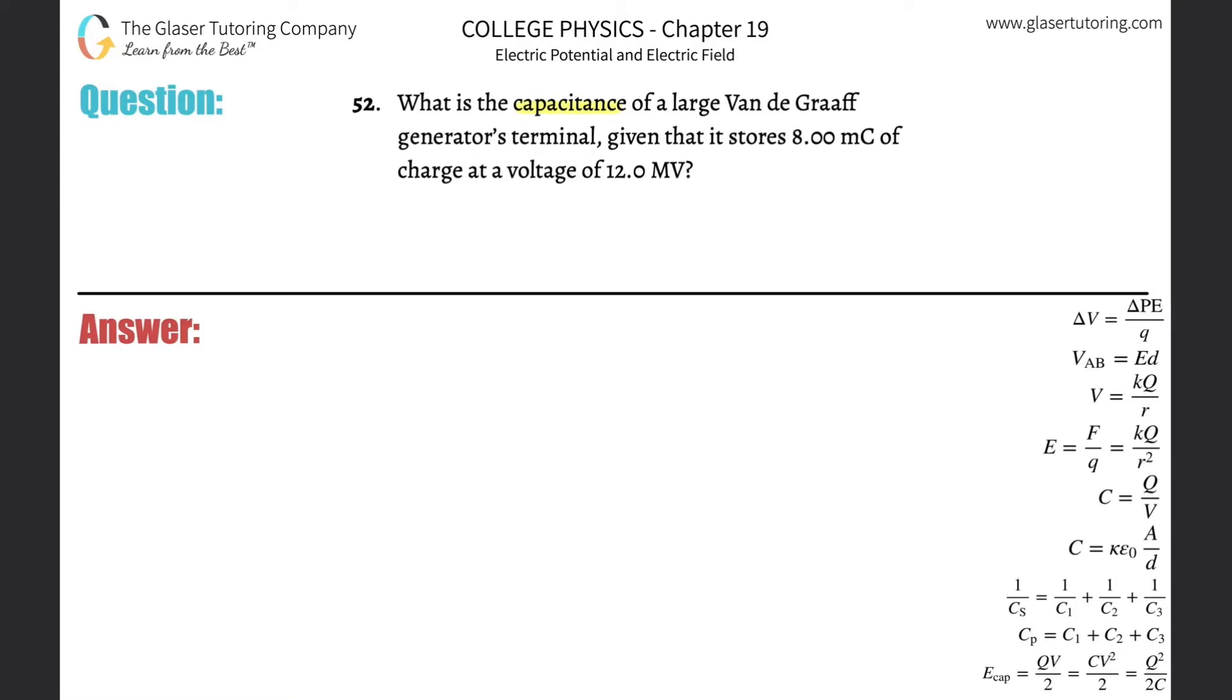Number 52. What is the capacitance of a large Van de Graaff generator terminal given that it stores 8 millicoulombs of charge at a voltage of 12 megavolts? All right, so take a look at number 46. I went through a detailed discussion of what a capacitor is. Here what we're going to do is just write down what we know and what we don't know.